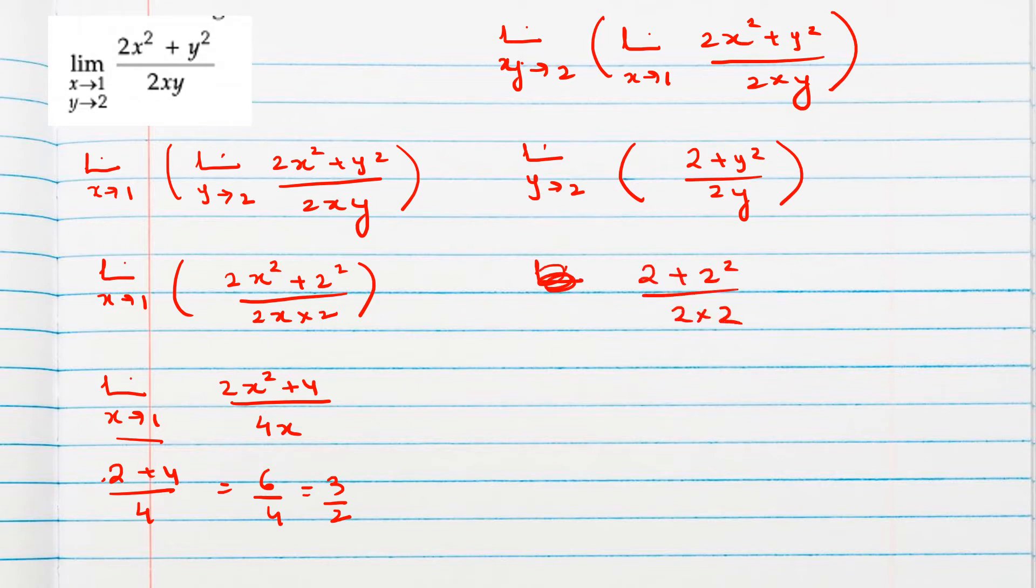So it will be again 6 by 4 means 3 by 2. So we can say both the limits are equal.